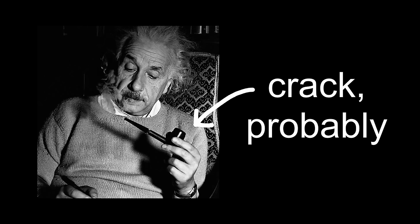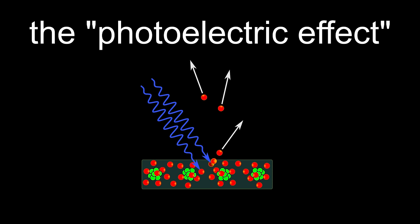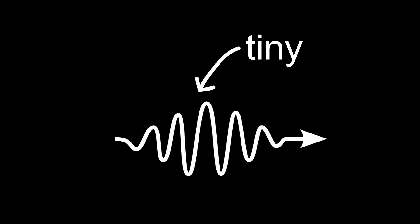Nah, screw that. Everything you know is wrong, said Albert Einstein, probably smoking crack, after hearing about the photoelectric effect and discovering that light comes in tiny packets called photons. I sure hope that doesn't unravel a whole new area of physics.